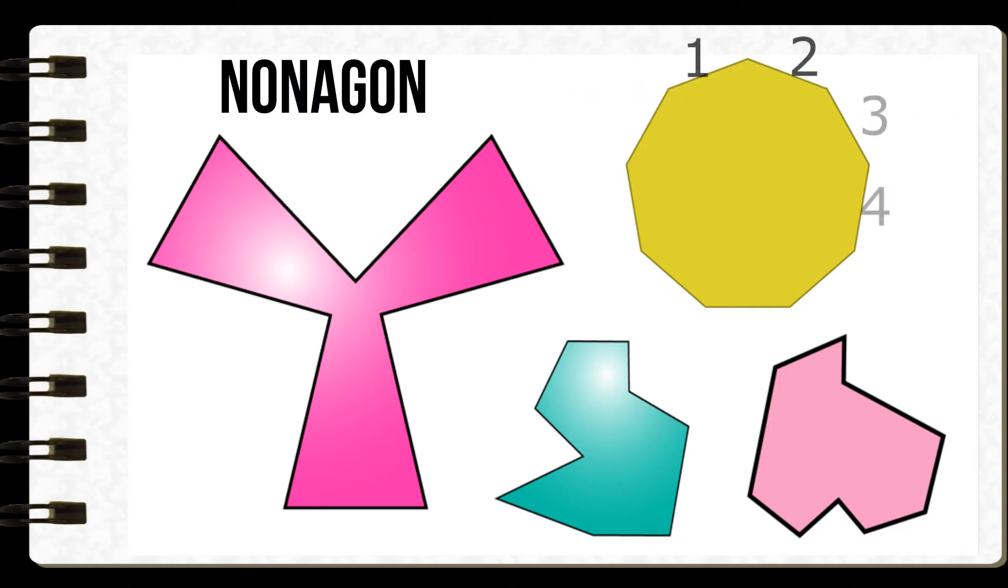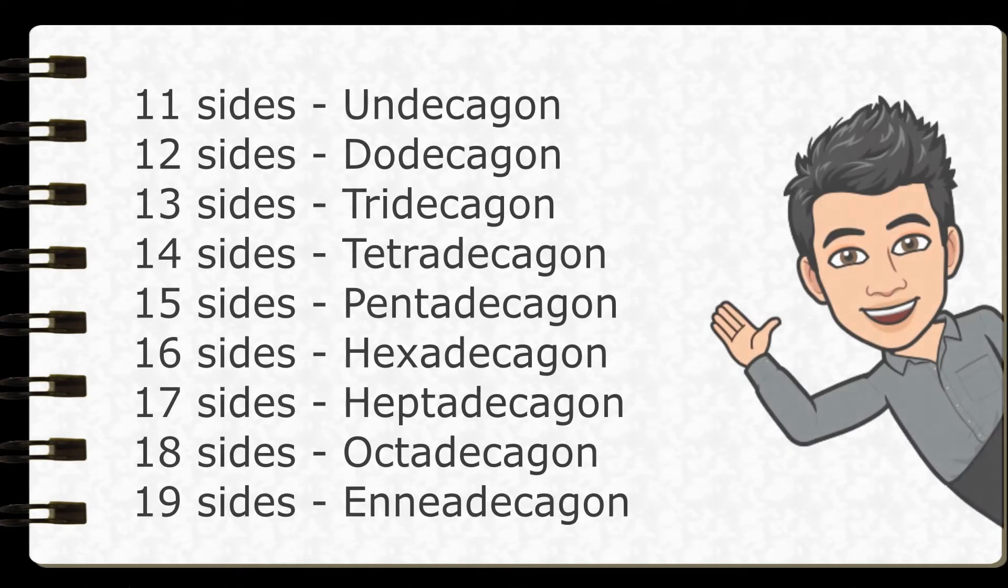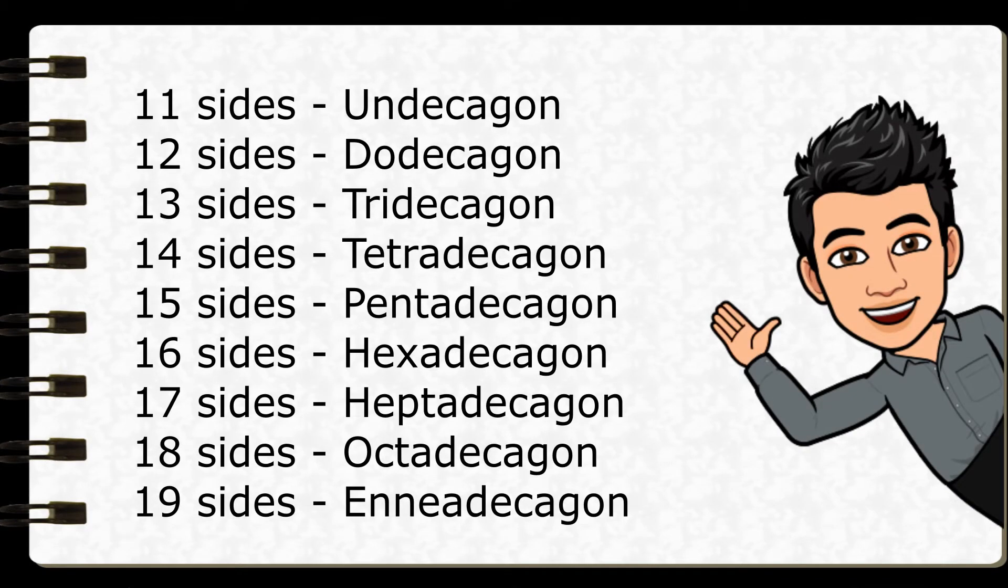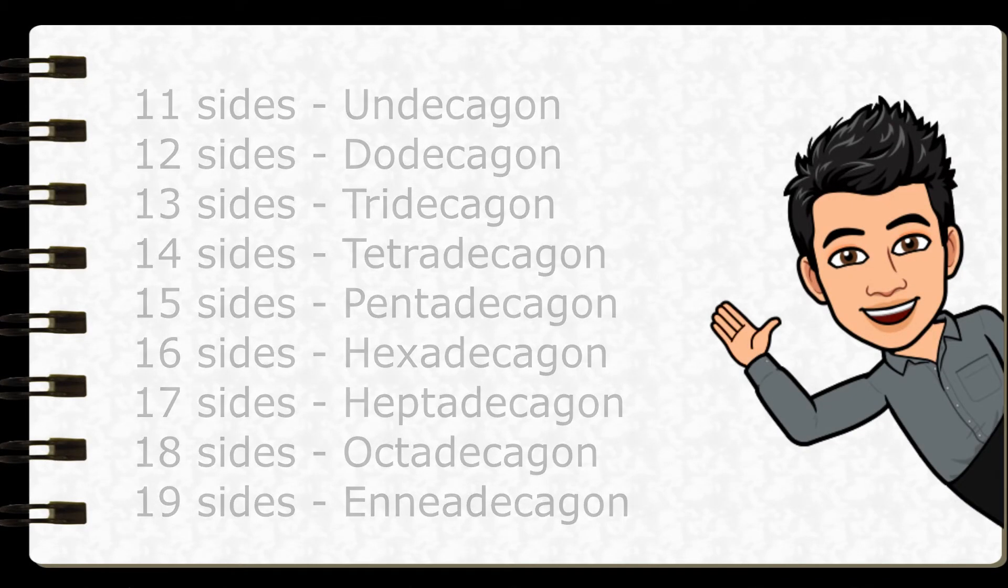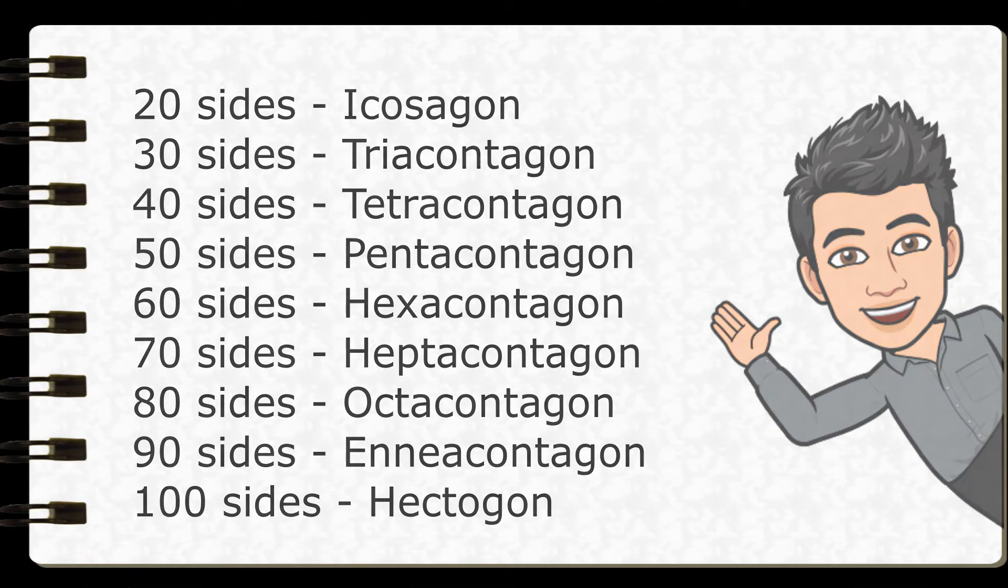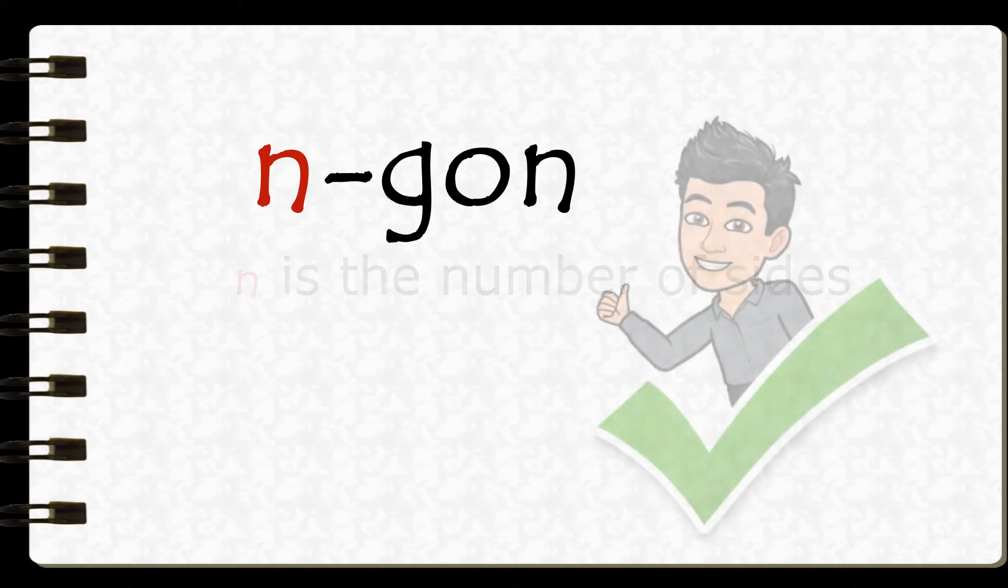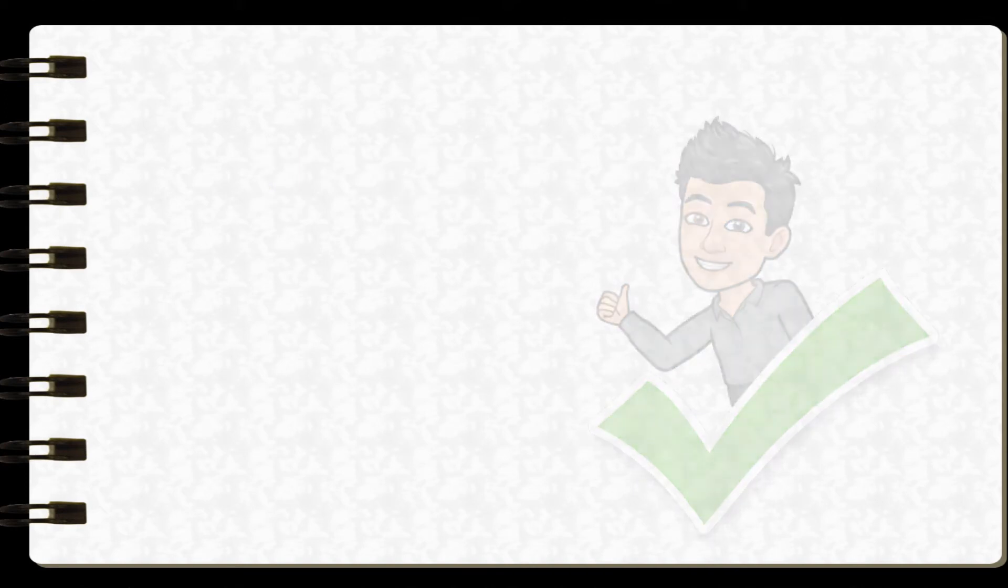Nonagon, it has nine sides. Decagon, it has ten sides. Now here are the polygon names beyond 11 sides. You can pause the video to check it out. Very hard to read and memorize. Don't worry, experts said that the term n-gon can be used to name them, where n is a number of sides. Very easy, right?